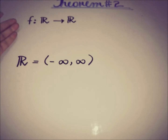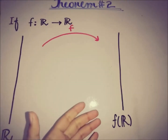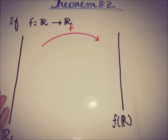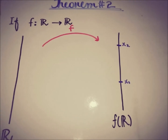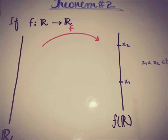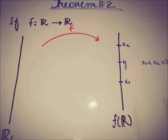The first part of the statement is that we have a continuous function f from ℝ to f(ℝ), both being real lines. If we take any two elements x1 and x2 in f(ℝ) such that x1 is smaller than x2, then by the Intermediate Value Theorem there must be an element y somewhere in between x1 and x2, and this y must be the image of some element in ℝ.